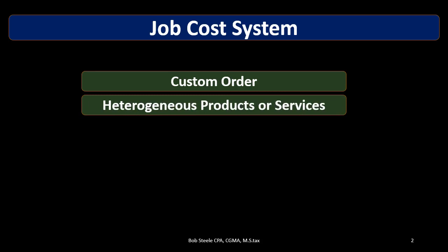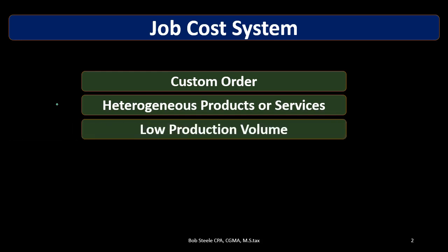The next characteristic is heterogeneous products or services — meaning they're different. Heterogeneous means different; homogeneous means the same. Because the items we produce are not all exactly the same, we cannot allocate costs evenly. If one guitar is more detailed than another, or one construction job is larger than another, we can't assign the same cost — that's why we use a job cost system.